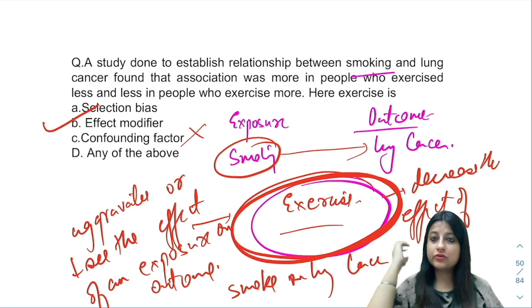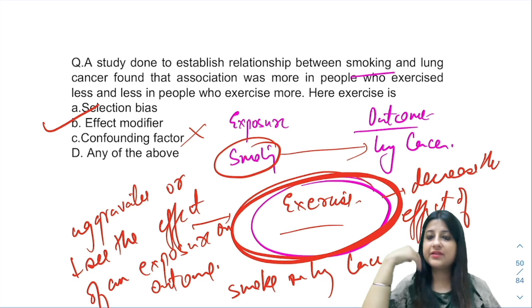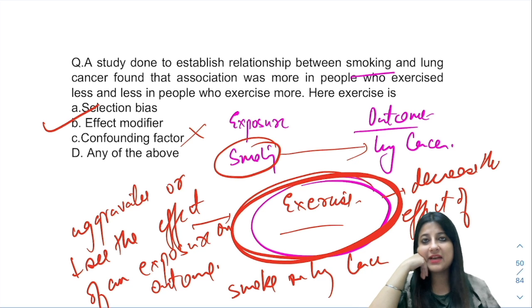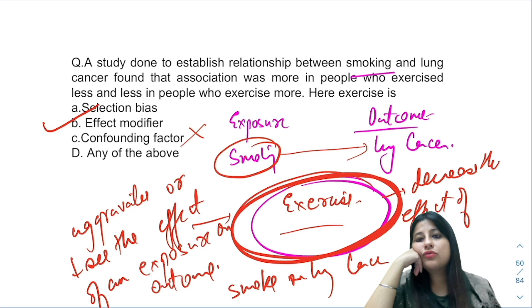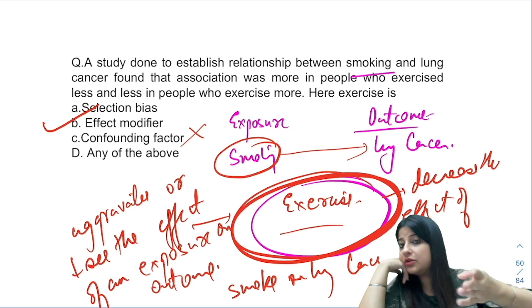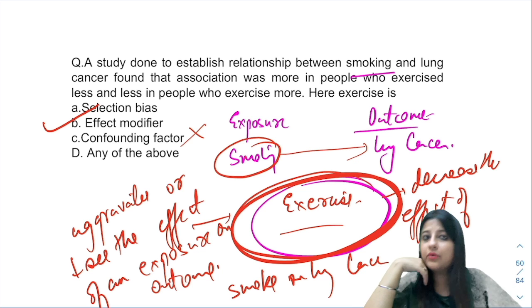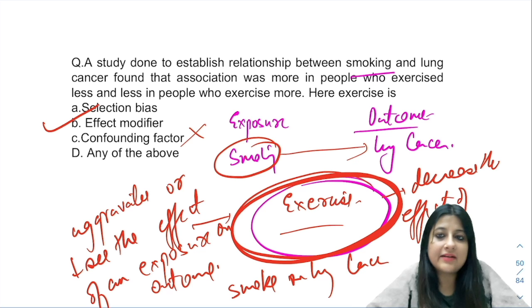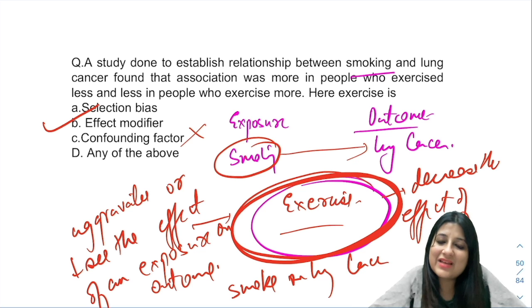Selection bias is altogether a different thing. It is seen in case-control studies. For example, if I know that a drug works at 102 degrees Fahrenheit, I select only those cases who have fever at or above 102 degrees. That is what selection bias is. Thank you so much.